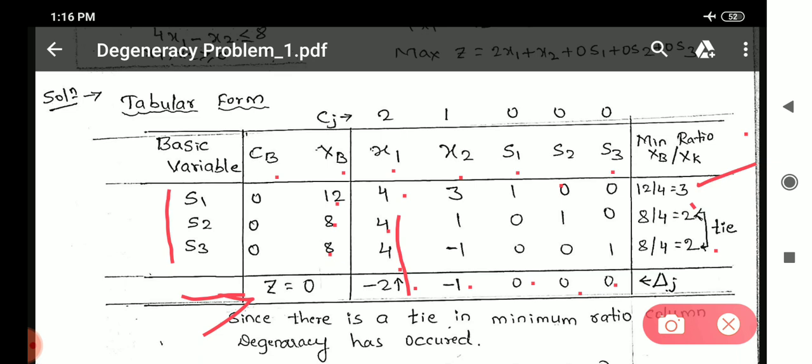So basically there is a tie between second and third row value. Therefore, degeneracy has occurred in this particular problem. Now, let us see how to solve this degeneracy problem or how to break the tie.